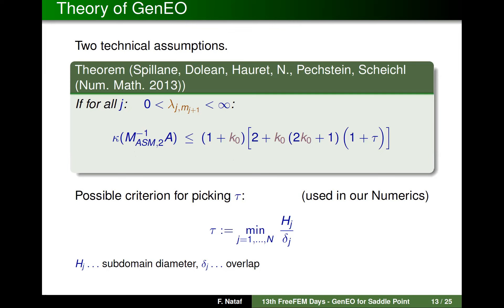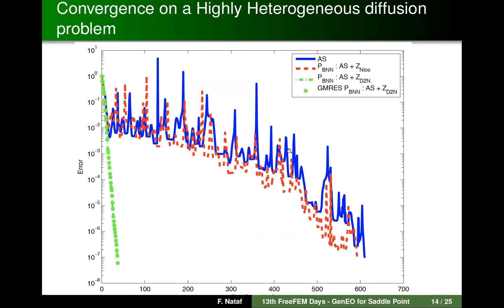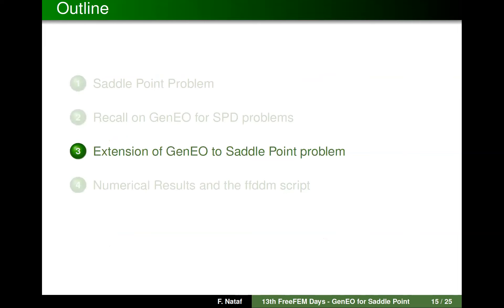The only thing potentially non-scalable is the size of the coarse space, which can be large or small depending on the difficulty of the problem. Convergence curves for a highly heterogeneous diffusion problem show: in blue the one-level method, which is slow; in red the two-level method with the Nicolaides coarse space, which is efficient for constant coefficients but insufficient for highly heterogeneous problems; and in green the GenEO coarse space variants, showing fast convergence.